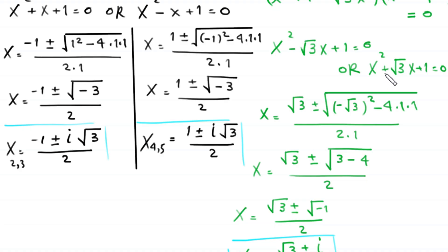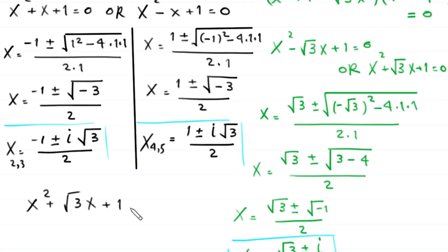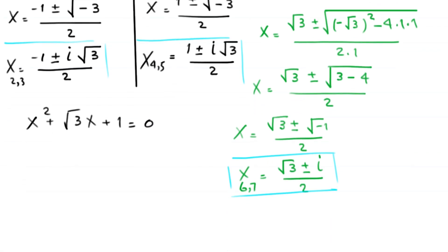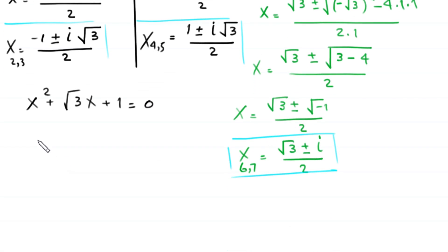Now we solve the remaining case: x² plus root 3 times x plus 1 equals 0. Using the quadratic formula, x equals negative root 3 plus or minus square root of root 3 squared minus 4 times 1 times 1, divided by 2 times 1.